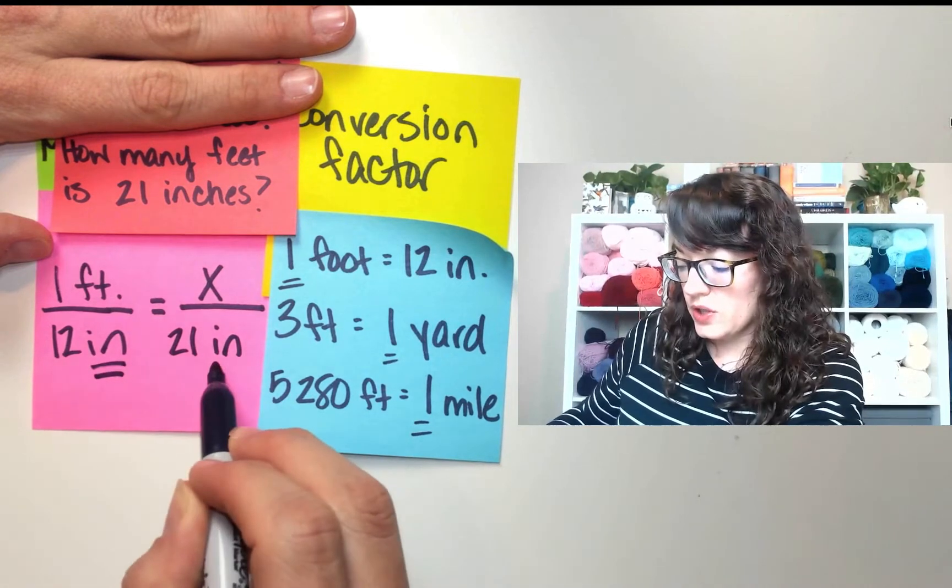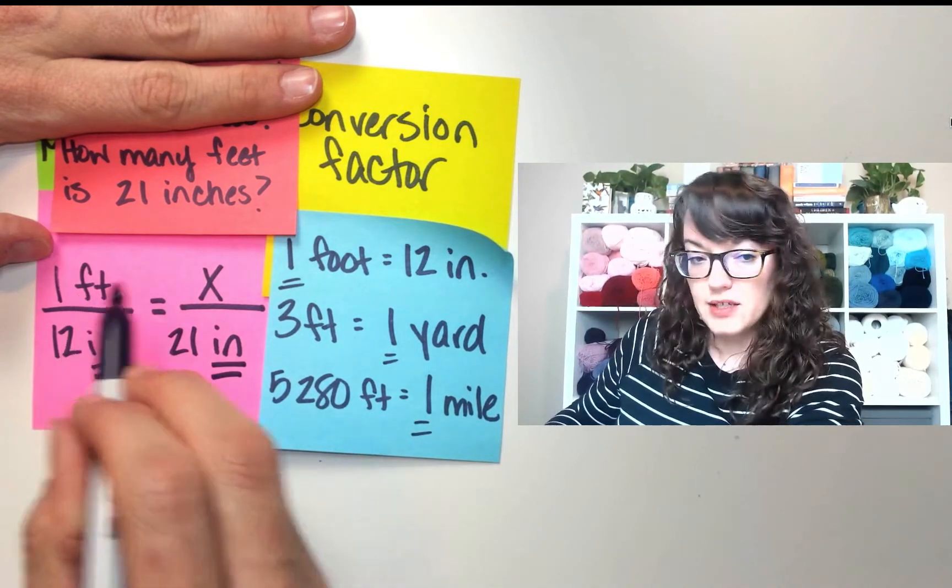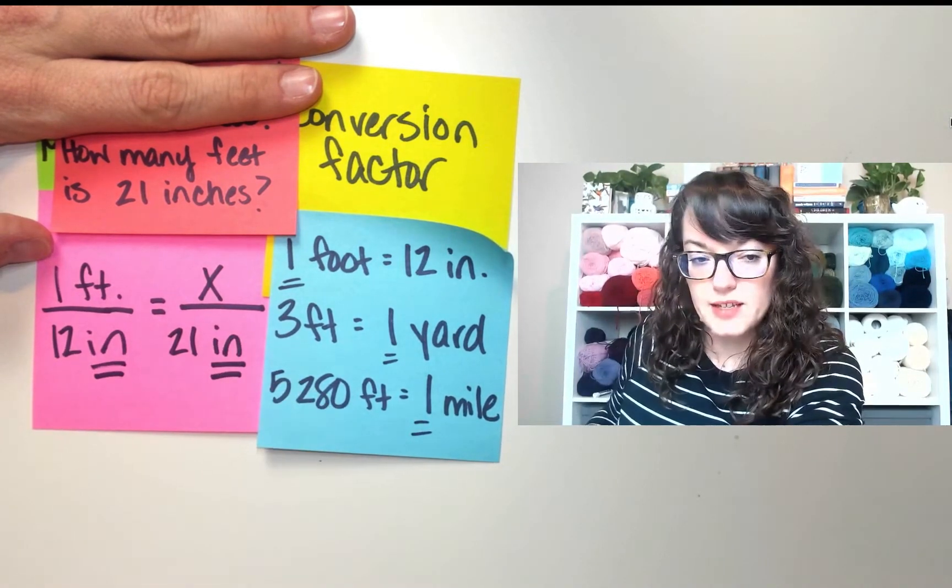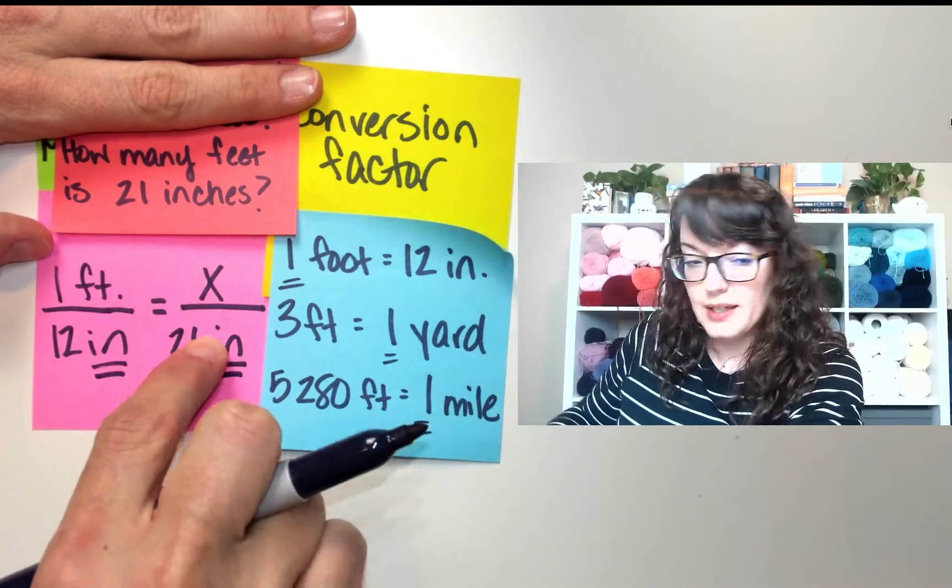So inches goes across from inches. Feet goes across from feet. And then you cross multiply and divide.